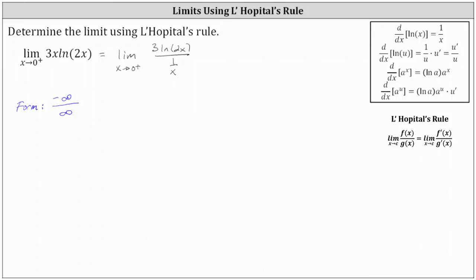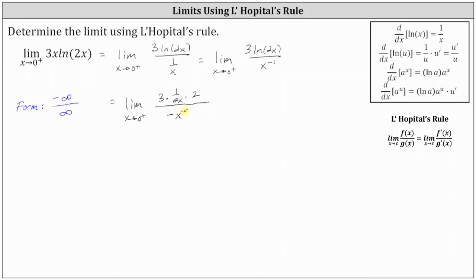Now we'll apply L'Hôpital's rule by finding the derivative of the numerator and denominator. Before we do this, let's write 1 divided by x as x to the power of negative 1. Applying L'Hôpital's rule, we have the limit as x approaches 0 from the right of: the derivative of 3 natural log 2x equals 3 times 1 divided by 2x times the derivative of 2x, which is 2. The derivative of x to the power of negative 1 is negative x to the power of negative 2.